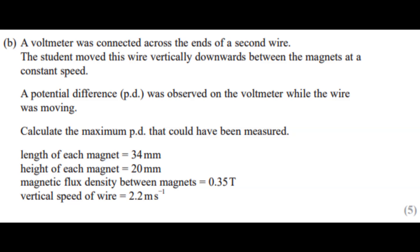Length of each magnet is 34 millimeters, height of each magnet is 20 millimeters, and the magnetic flux density between magnets is 0.35 tesla. The vertical speed of the wire is 2.2 meters per second.